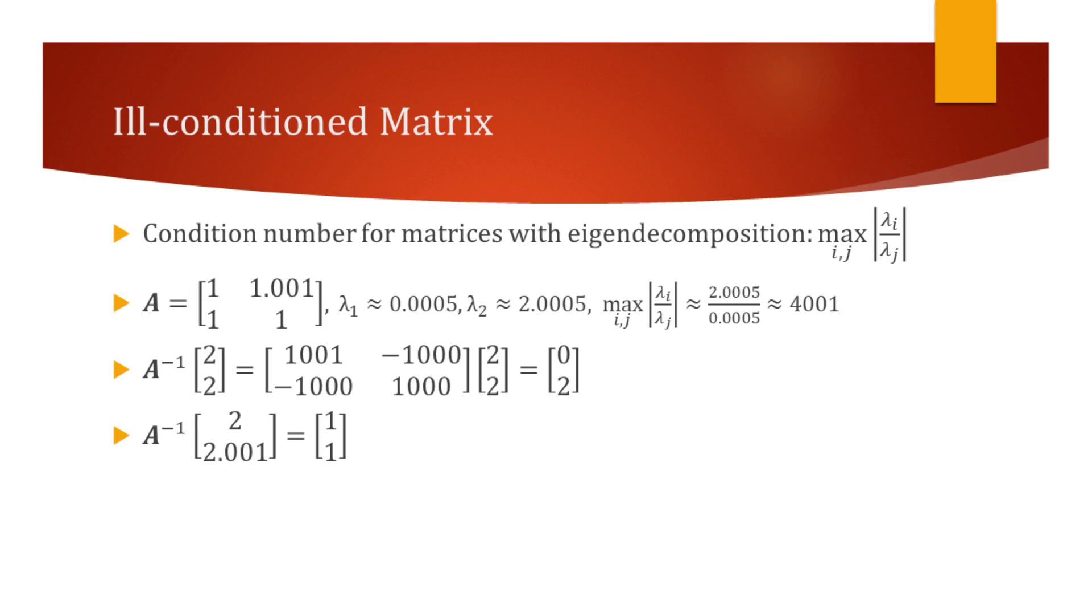First, we find the product of the inverse of A and a vector composed of elements 2 and 2. We see that the result is a vector with elements 0, 2.